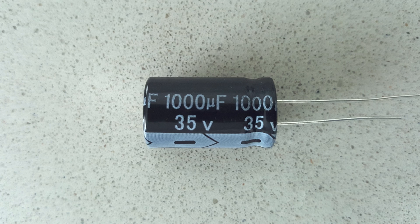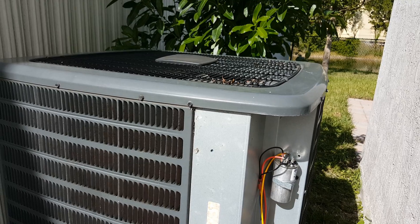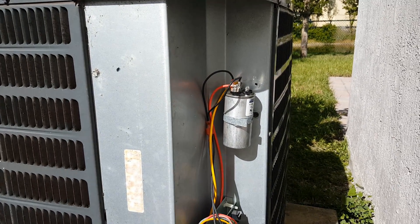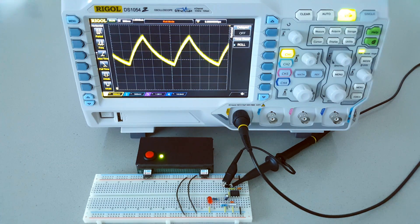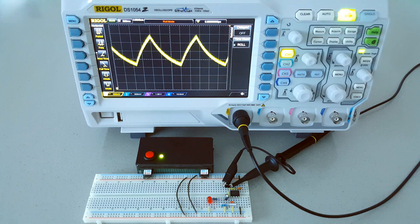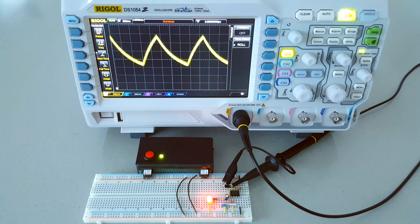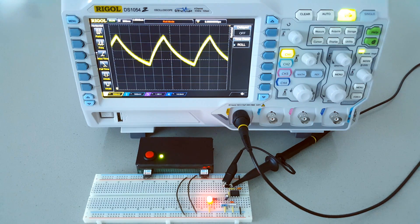The problem with electrolytic capacitors is that they degrade over time and very often they are the cause of problems with appliances. Because the time it takes to charge and discharge a capacitor is predictable, it can be used to create timers or delays, although that requires other components.